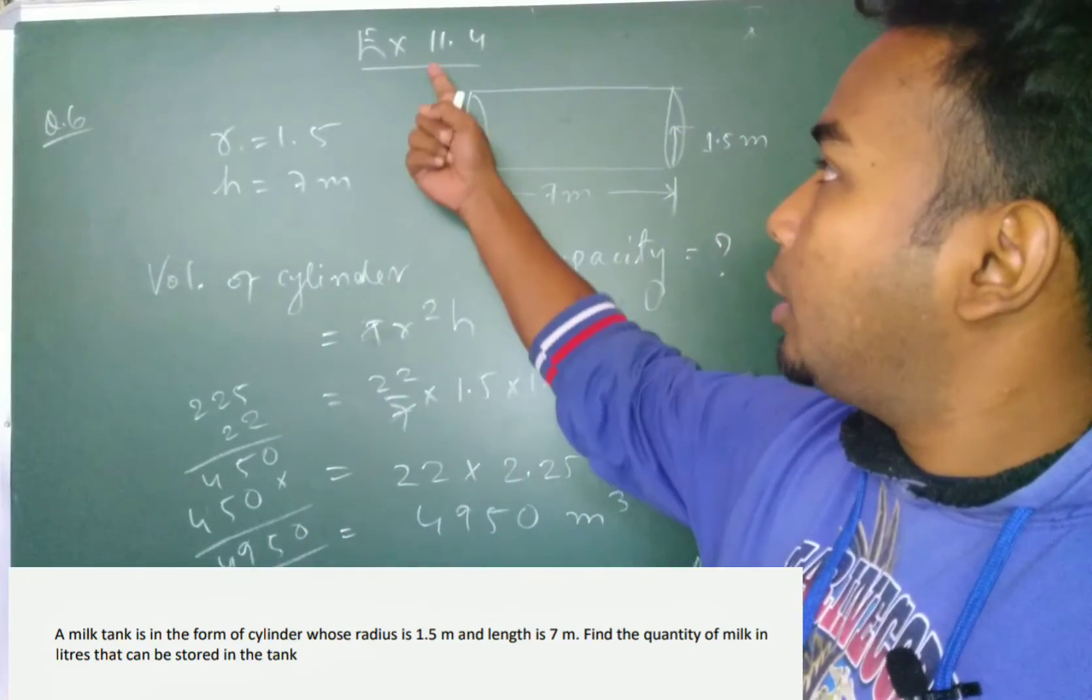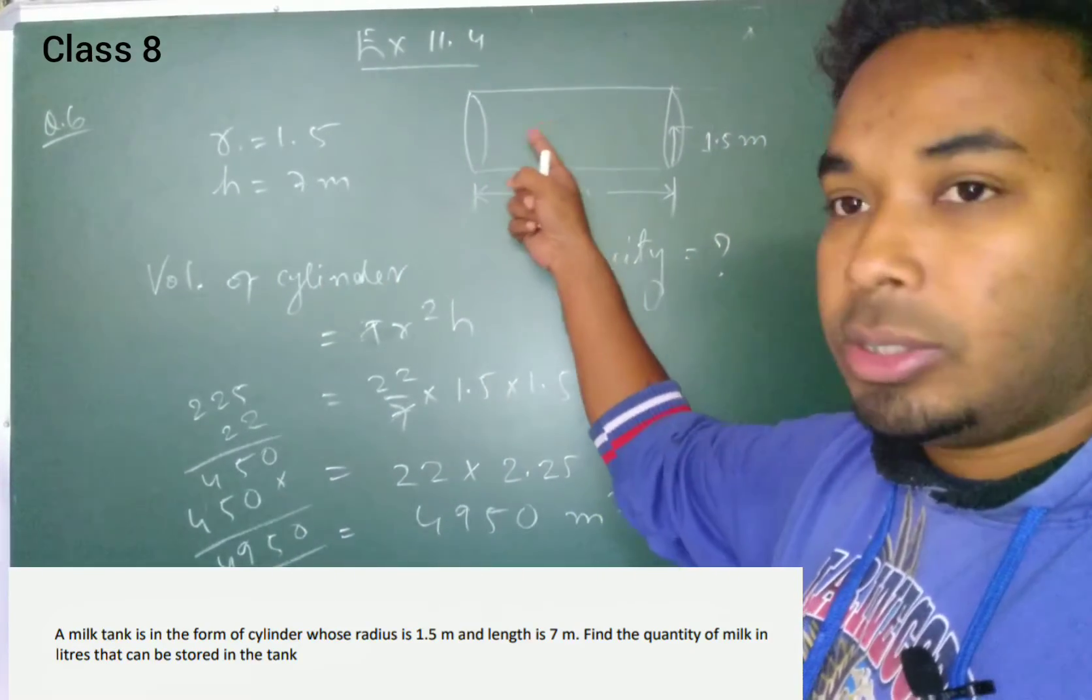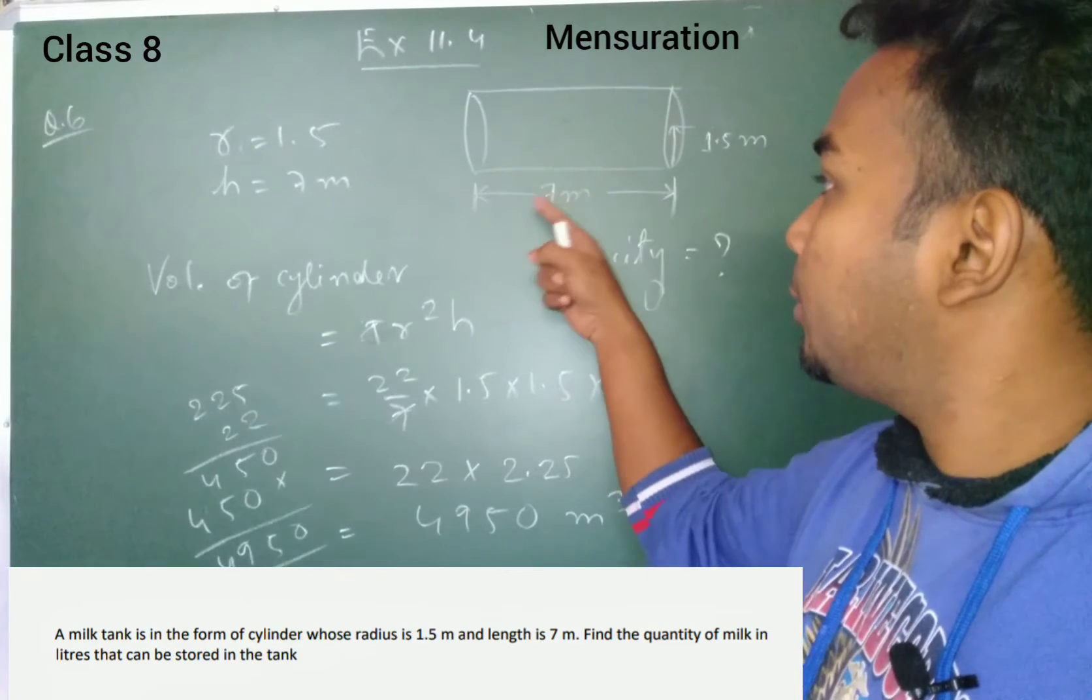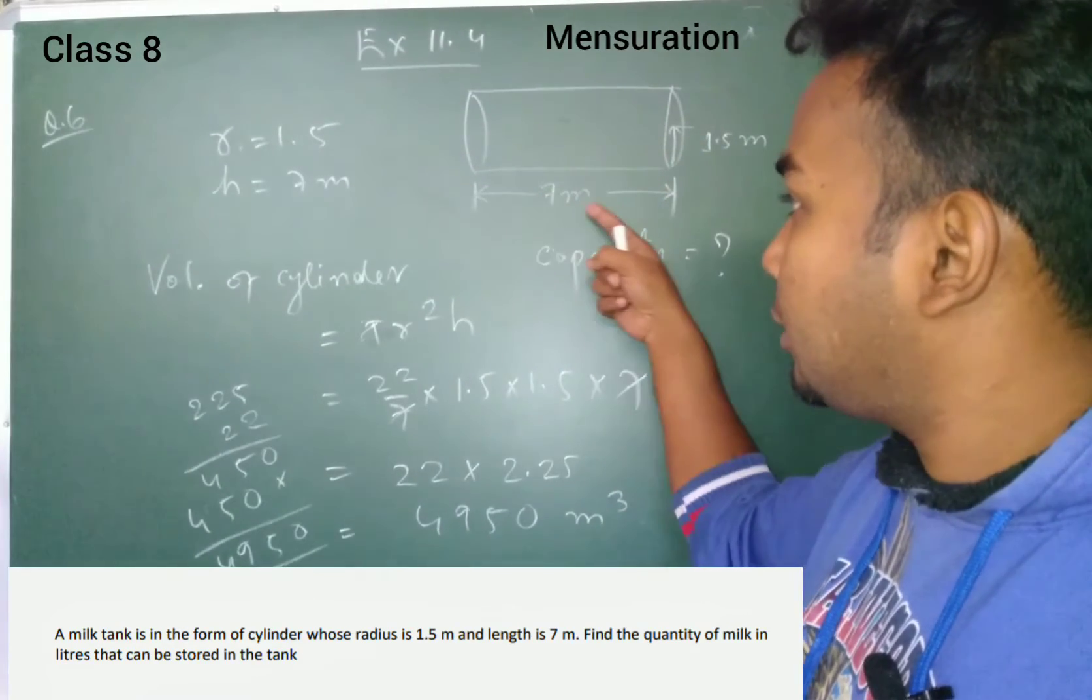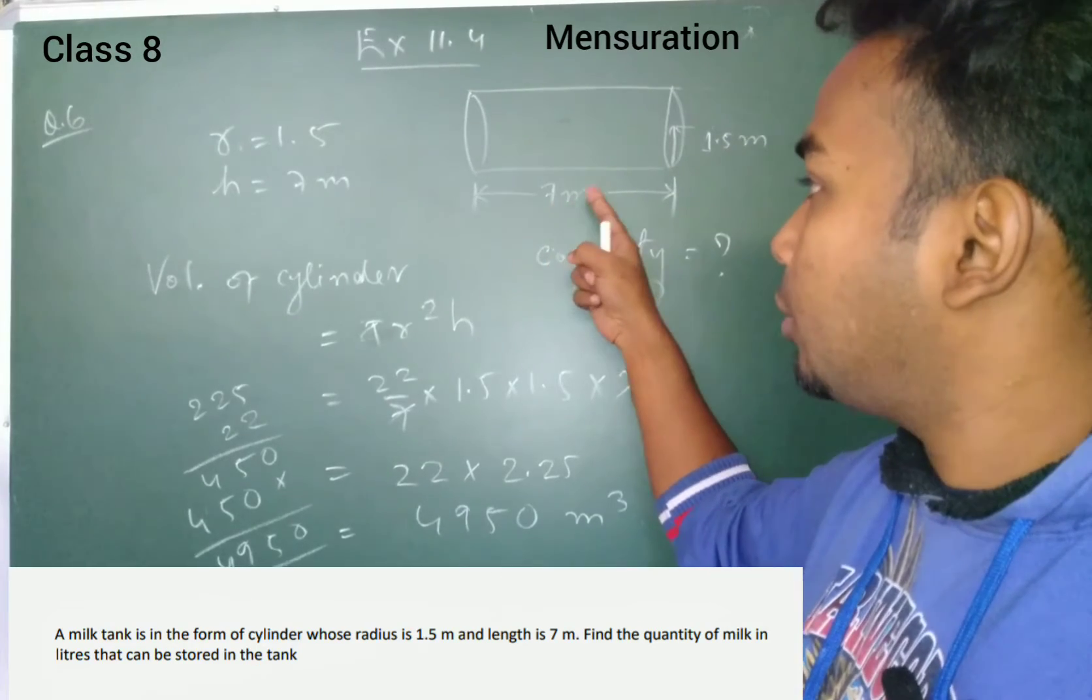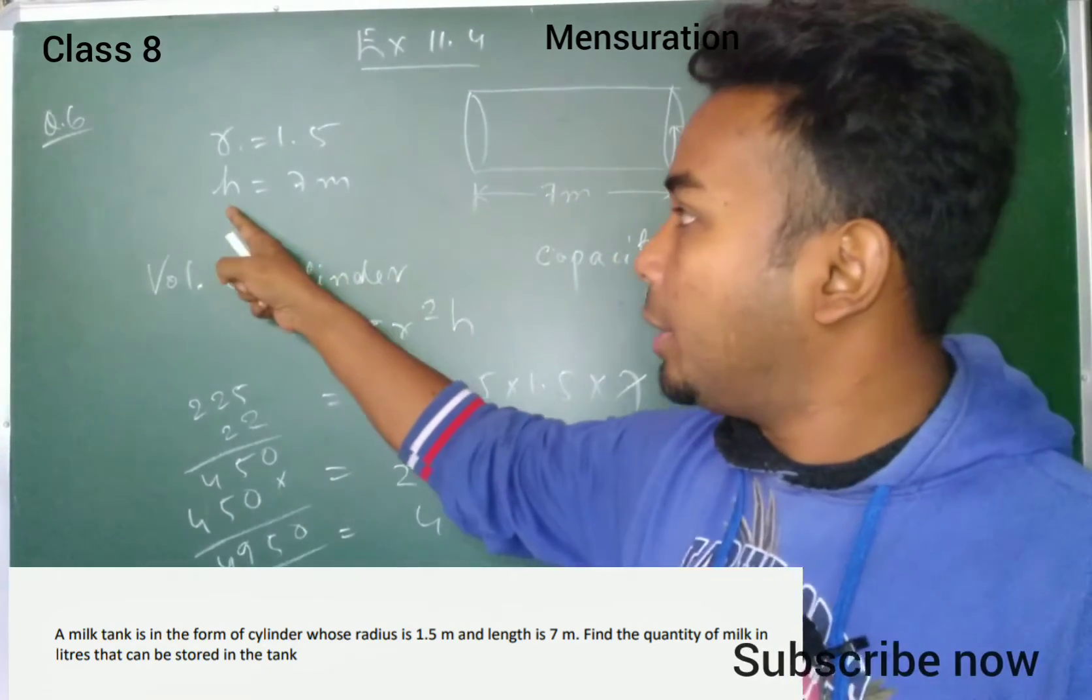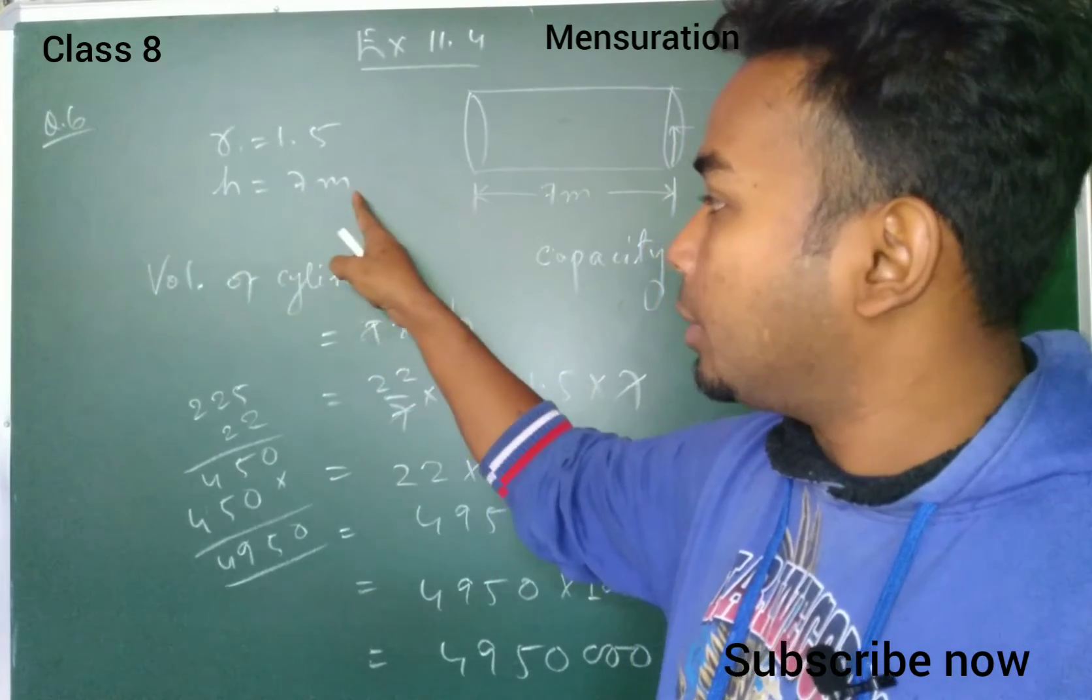Good morning. This is problem 11.6 on a cylinder. The radius is 1.5 meters and the length is 7 meters. The length will be considered as height, so radius is 1.5 meters and height is 7 meters.